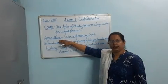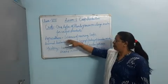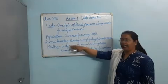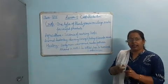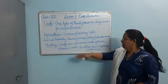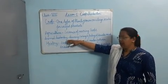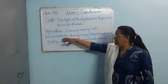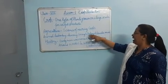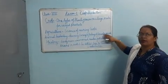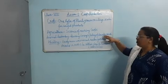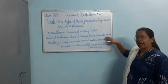Apart from growing crops, we also domesticate animals for milk, meat, and other products. Animal husbandry is the branch of science in which the rearing, caring, and feeding of domestic animals takes place. We obtain useful products from animals too.